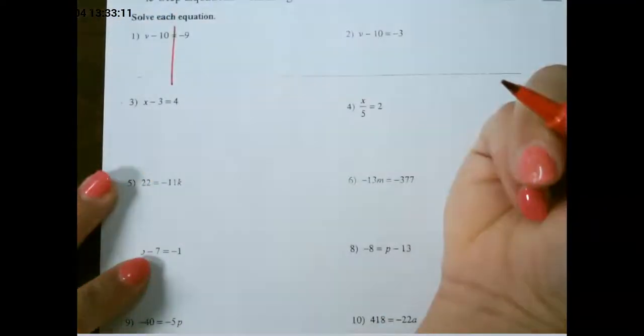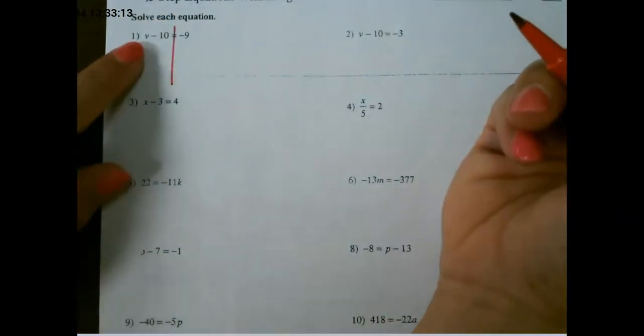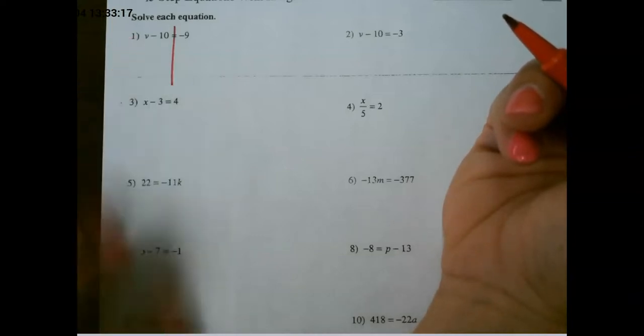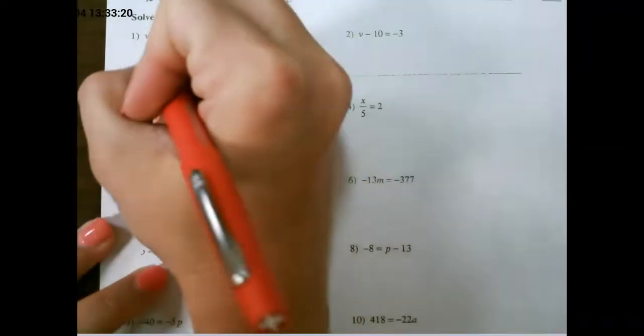Let's look at a couple of examples. So if I draw my line through the equal sign to create two sides and always start on the side with the variable. This says v minus 10. The inverse or opposite of that is to add 10.